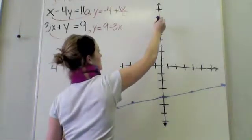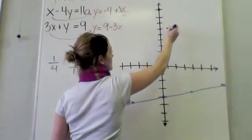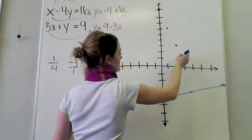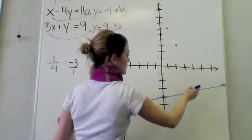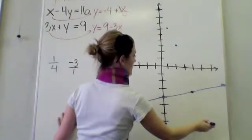I'm going to go down 3. So 1, 2, 3, over 1. Down 3, over 1. I'm going to get down 3, over 1. Another time, down 3, over 1. Another time, another time.